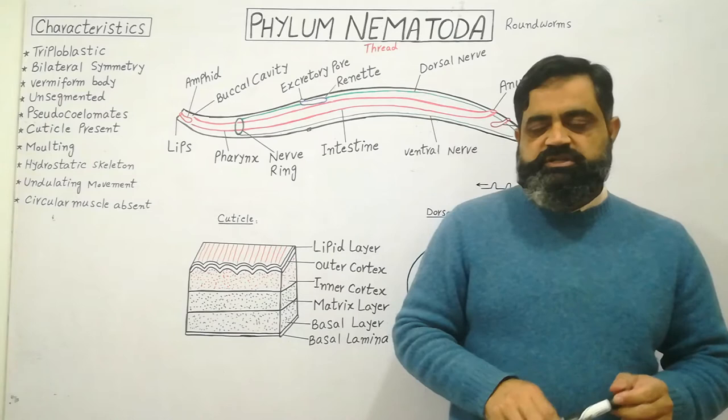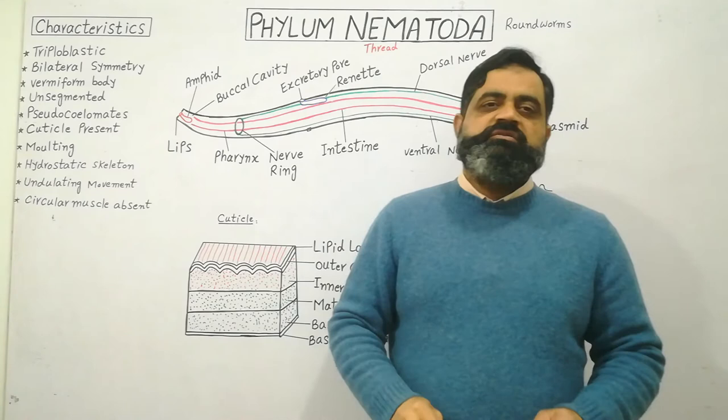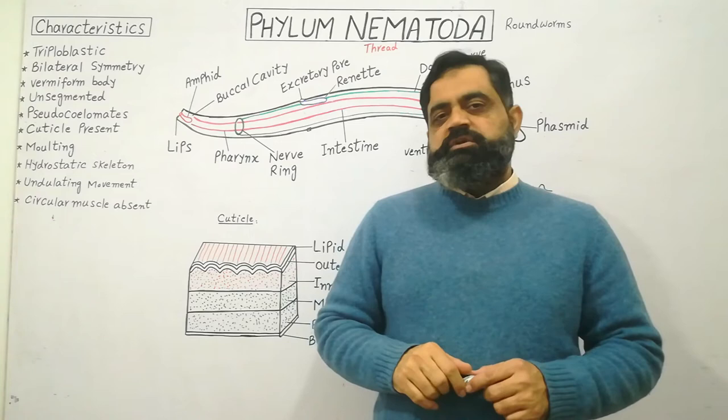Number one, the animals of phylum Nematoda are usually triploblastic. Triploblastic animals have three body layers: ectoderm, endoderm, and mesoderm.